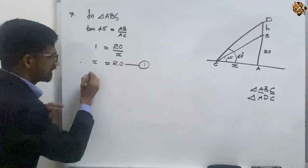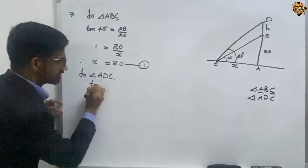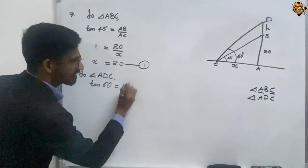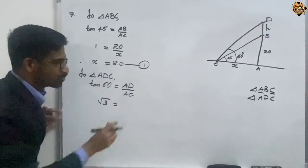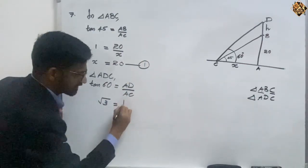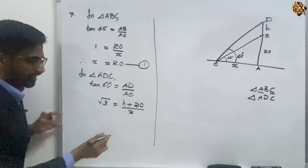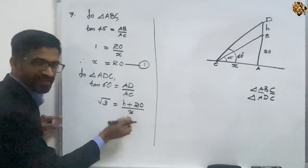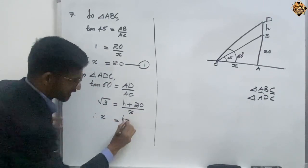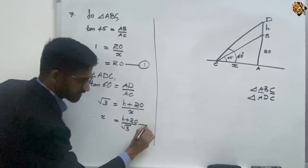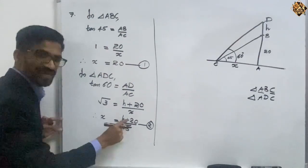Similarly, one more equation. In triangle ADC, tan 60 equals opposite by adjacent, that is AD by AC. The value of tan 60 is root 3, equal to (H + 20) by X. Taking X to one side and root 3 to the other, therefore X equals (H + 20) by root 3. This is equation 2.